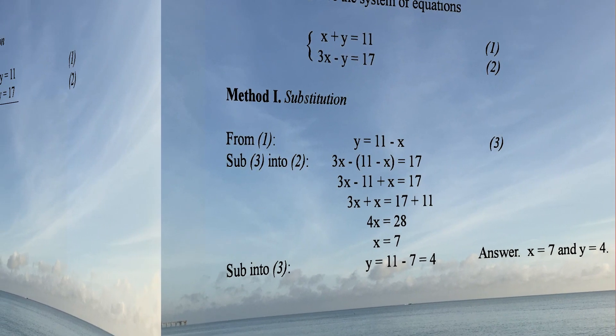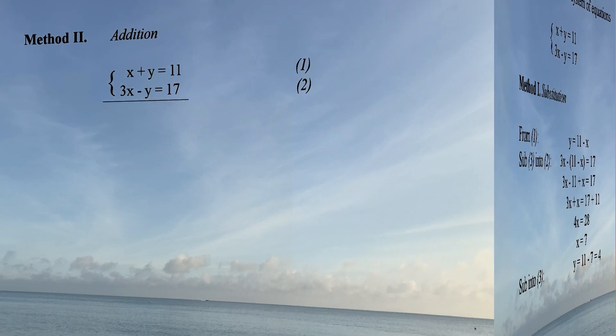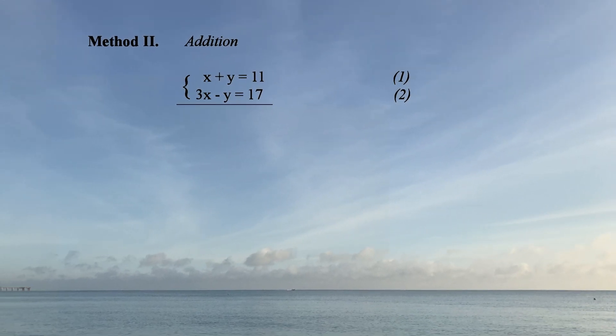Now let's look at another method. We could either add or subtract equations to eliminate one of the variables. In this case, it's easy to get rid of y.